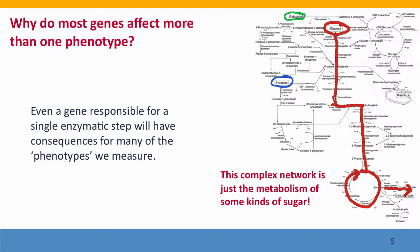For instance, blocking this step is going to cause all of these intermediates to back up. Fructose-1-phosphate is going to accumulate — that's going to affect all of the metabolism of fructose, it's going to affect the metabolism of mannose, and it may affect the initial movement of glucose into the pathway. All of these things will be changed just by a single mutation, and all of these are connected to other metabolic processes.